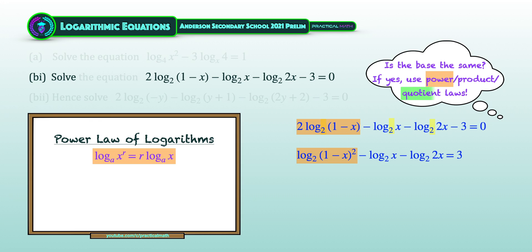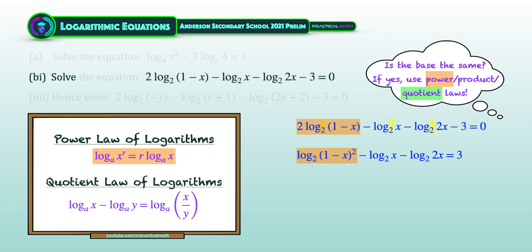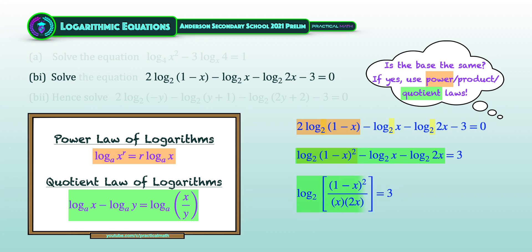As all logarithmic terms on the left are separated by a minus sign, we will now apply the quotient law of logarithms, where log x to the base of a minus log y to the base of a equals log (x divided by y) to the base of a. We merge the three logarithmic terms of base 2 into a single logarithm with (1 minus x) squared in the numerator, divided by the product of x and 2x in the denominator.